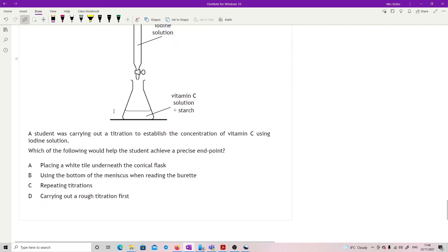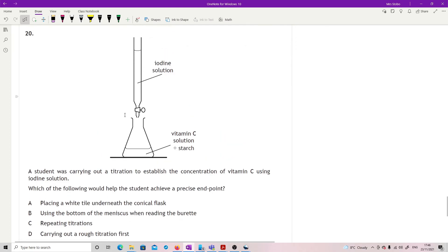Question 20: We've got iodine solution in that burette. A student was carrying out a titration to establish the concentration of vitamin C using iodine solution. Which of the following would help the student achieve a precise end point, so that means being able to stop it exactly as it turns? All of these are things that you would say are good things to do, but the one that's going to allow you to say 'right that's it, it's definitely gone right now' is the white tile. Reading the bottom of the meniscus is essential just to give you good set of data, however with iodine solution, if it's a concentrated one, that's difficult to read anyway. Repeated titrations makes it more reliable, and carrying out a rough titration, it's just good practice so that you've got a good set of data. That's the multiple choice from that year.